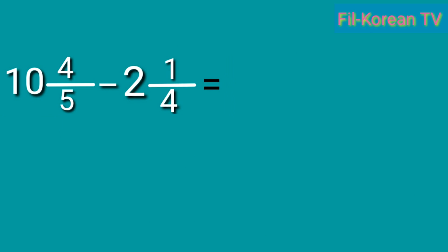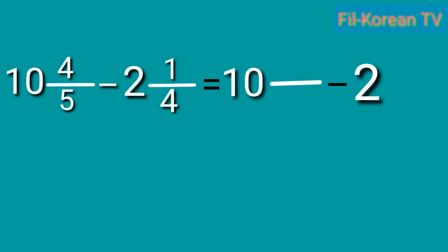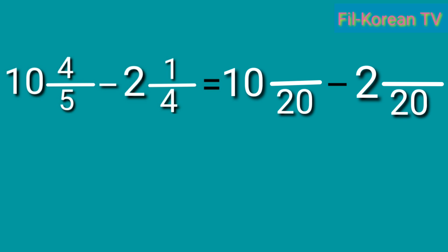Okay, so let us answer. Of course, we will copy first the whole numbers. Write the whole numbers: 10 and 2. Then, get the LCD of 5 and 4. The LCD of 5 and 4 is 20.